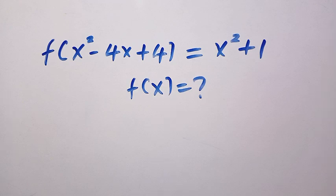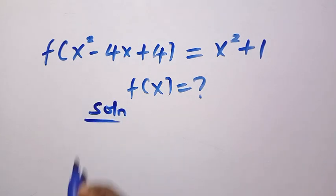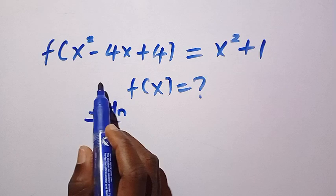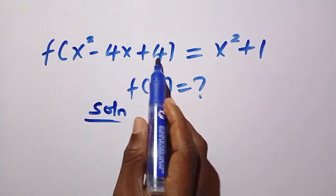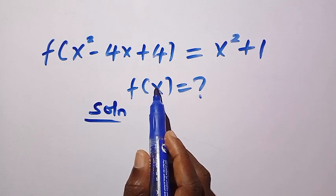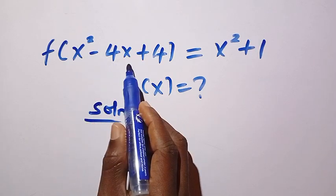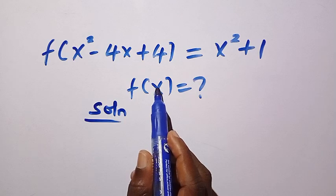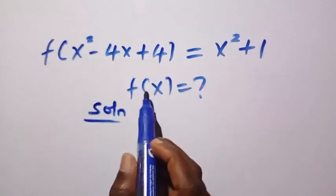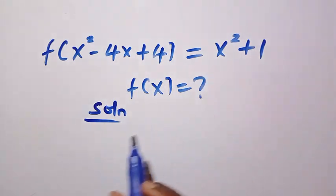Let's see how we solve this. We have a very long domain in this function, which is x squared minus 4x plus 4. I want to reduce this to only x. No matter what value we plug in, this domain is always greater than x, so we're expecting a function that's less than the output of the given function.